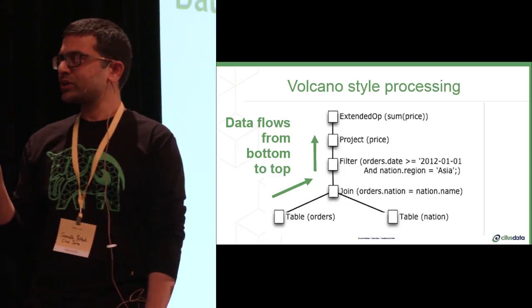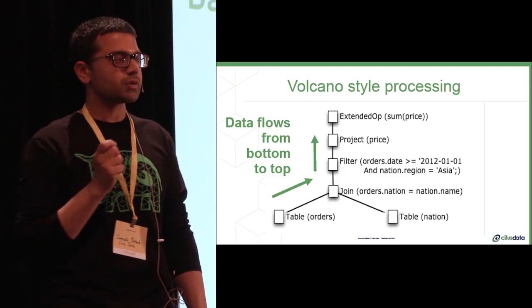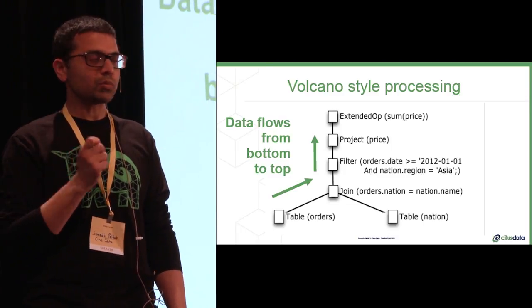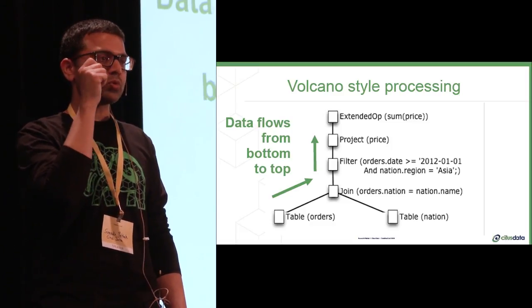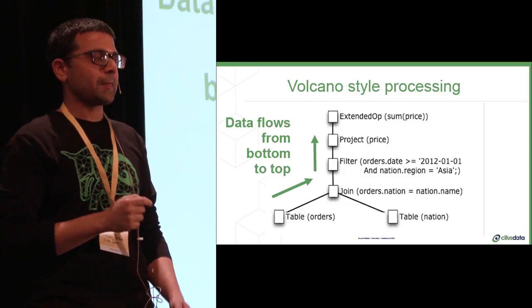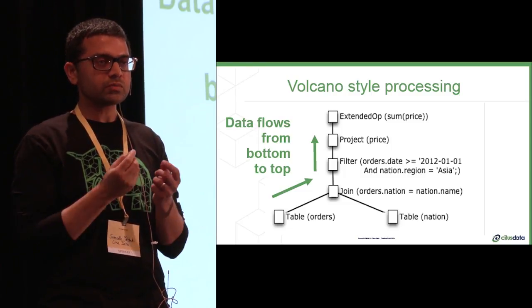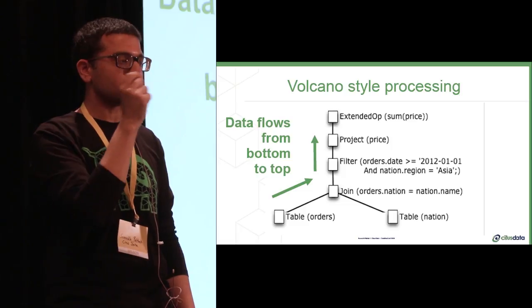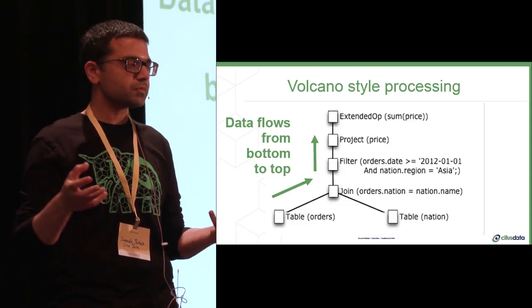A quick aside on how actually relational databases execute these. It's called the volcano style or the iterator model. Essentially, the topmost node calls next tuple. And then that call cascades down the tree, down to join, which then scans the data. And then the data basically flows from the bottom to the top.